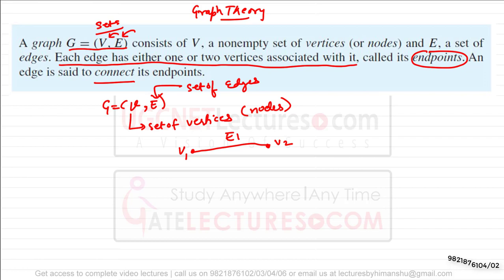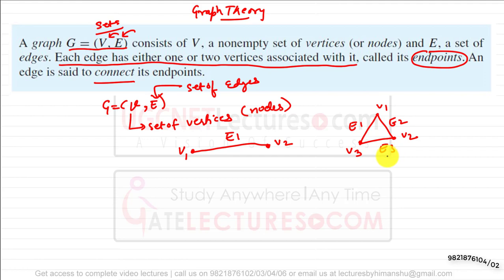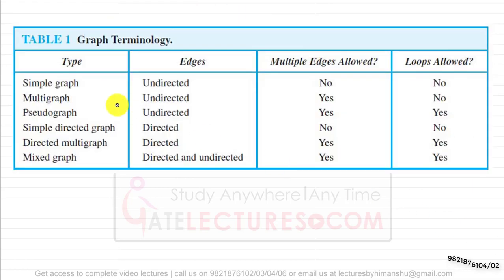This is how we represent a graph. For example, this graph has three vertices V1, V2, and V3, and edges E1, E2, and E3. The endpoints of edge E3 are V3 and V2, and the endpoints of edge E2 are V1 and V2.